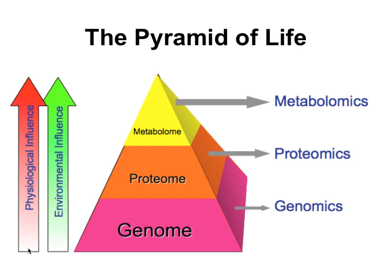If the environment affected our genome, we'd all be mutants. Genes are highly stable — yes, there are epigenetic events and mutations, but they're rare. The metabolome, on the other hand, is changing profoundly. You've just eaten breakfast, which is changing your body chemistry quite profoundly. What you're eating, breathing, drinking, and even hearing is changing your metabolome.